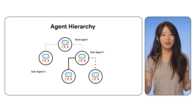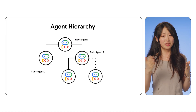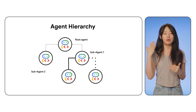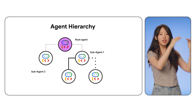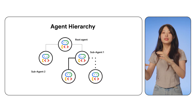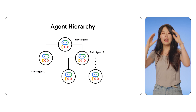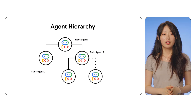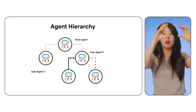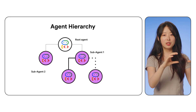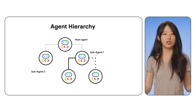Agent hierarchy is the backbone. When you build with ADK, agents form a hierarchy like an organizational chart. They have parents and sub-agents — a parent agent can manage multiple sub-agents, and they follow a single parent rule, meaning each sub-agent only has one parent agent. You can think of it like a company: the root agent is the CEO, and the sub-agents are VPs, managers, and workers. Everyone knows their roles, and together they get the job done.